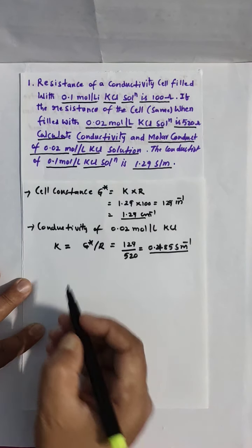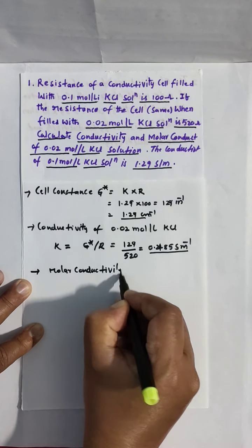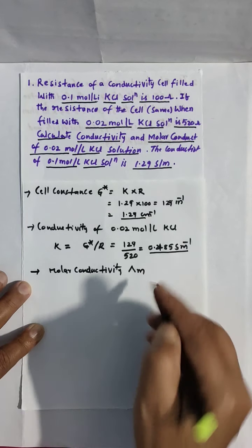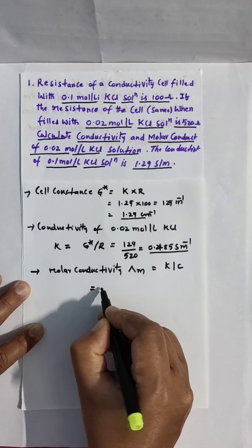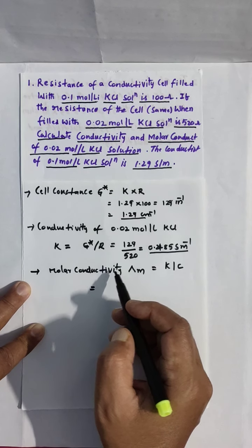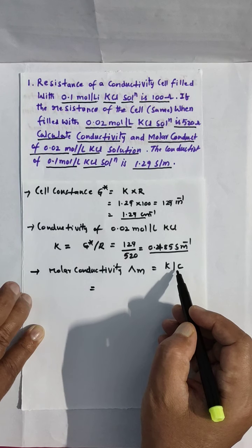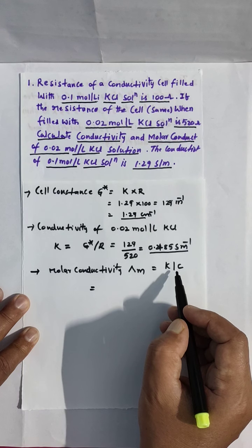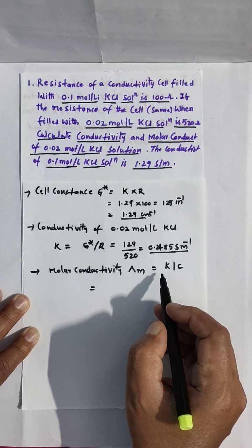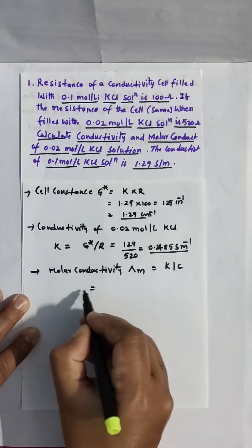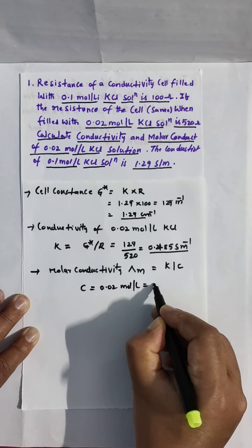Next they asked molar conductivity, Cap M. Molar conductivity Cap M equals K upon C. We need to convert concentration 0.02 mol per liter into mol per centimeter cube, which gives you 20 mol per centimeter cube.